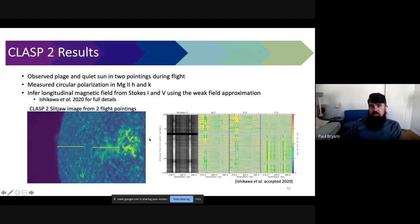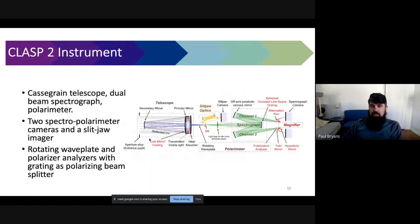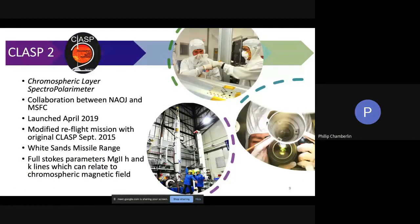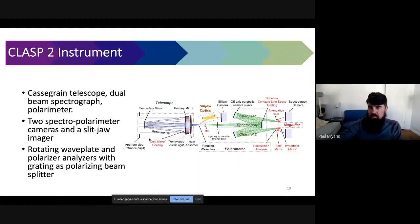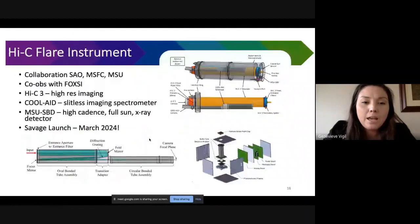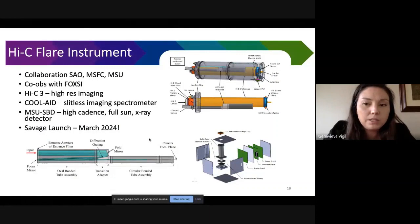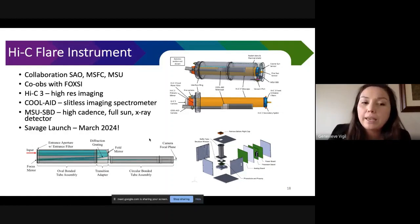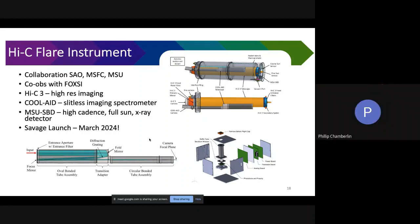Phil Chamberlain had a question. I was just wondering what the time cadence of Hi-C Flare is. Oh that's a good question. I'm pretty sure that we're trying to keep it pretty close to what Hi-C 2.1 performed. No that's not true. I think we're trying to go faster. I don't know off the top of my head though. Ultimately we are trying to study flare dynamics so it has to be relatively quick. But I can get back to you on that if you send me an email.